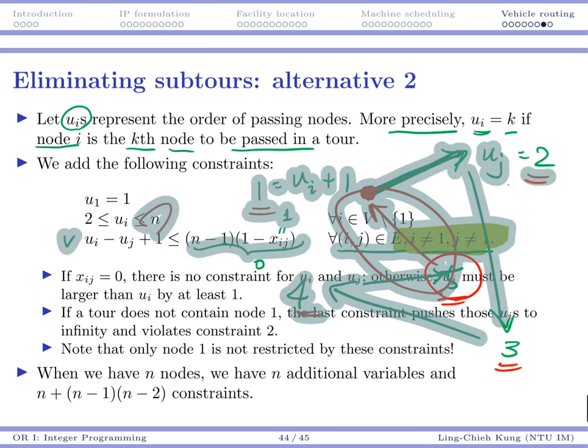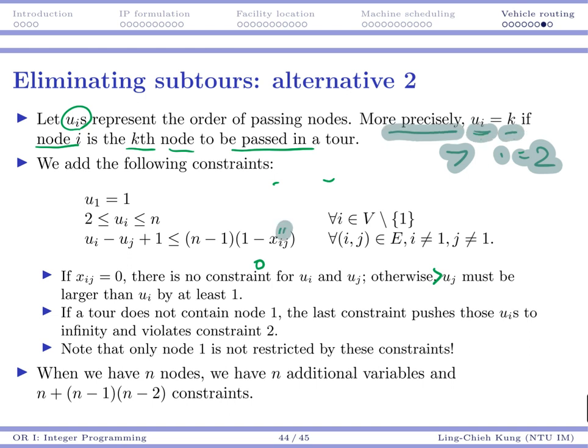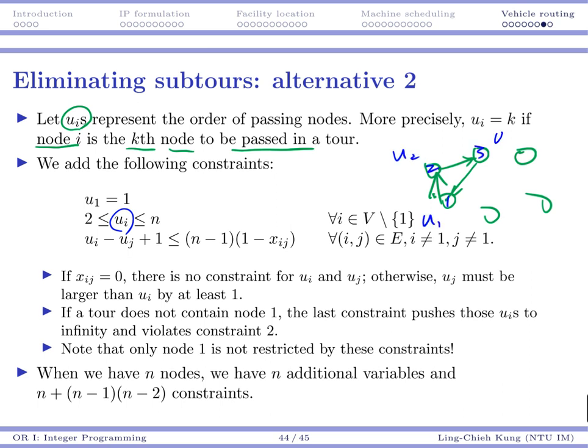So if that's the case, then what we are trying to do is to say that you cannot have a subtour. So why is that? Suppose you have a graph like this and somehow you see there is a subtour. Then pretty much what we are saying is that you need to label each node by ui. Let's say these are nodes 1, 2, and 3. Then for u1, u2, and u3, you're going to see that u2 should be u1 plus 1, u3 should be u2 plus 1, and u1 should also be u3 plus 1. So that's going to have a conflict. That's impossible. So you cannot have a subtour.